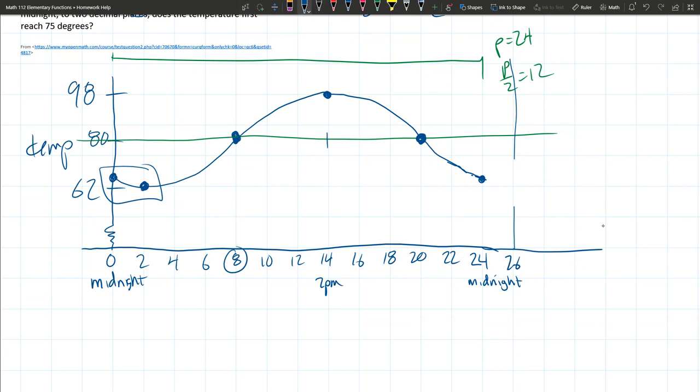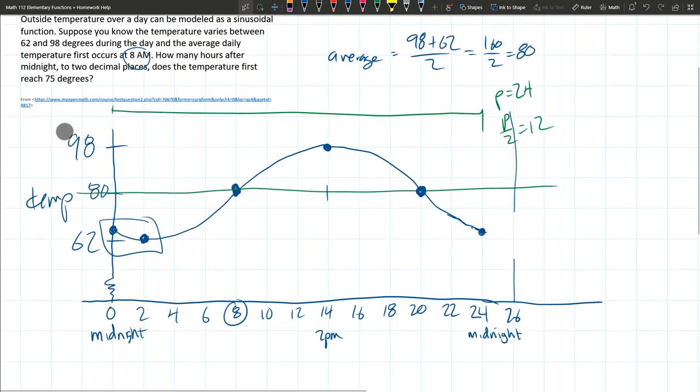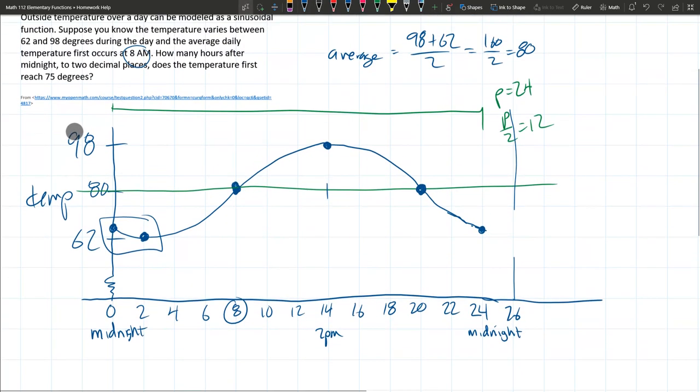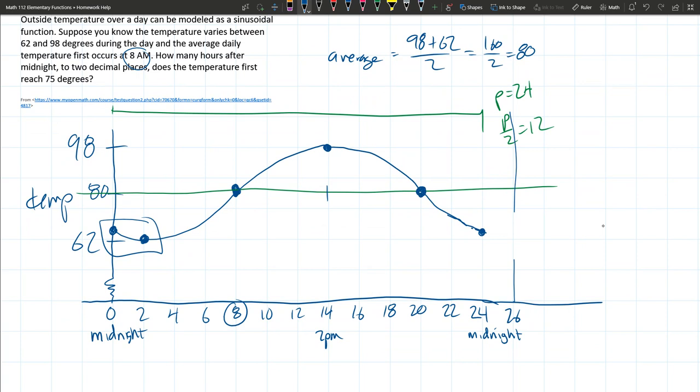Amplitude, we already computed somewhere. Maybe we didn't. Average is 80. So our amplitude is from 80 to 98. I'll measure that right here. And just looking at this, it's pretty easy to see it's 18. 98 minus 80 is 18, and 80 minus 62 is another 18. So we use big A as 18.